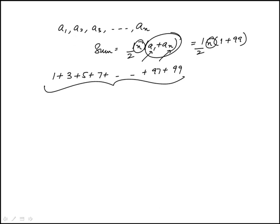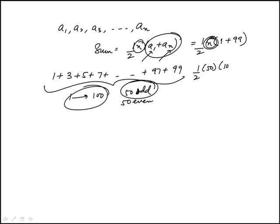One easy way would be we know 1 through 100, 50 are odd and 50 are even. And we're looking at the odd ones, so that's n is 50, and that's 100.